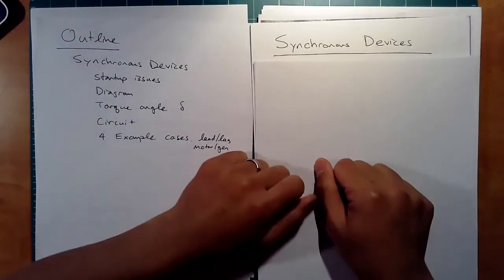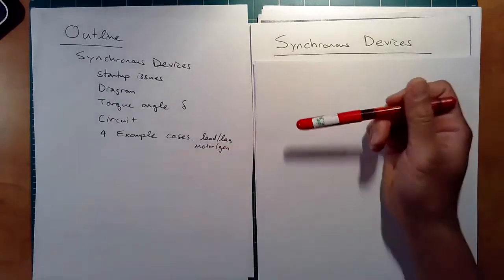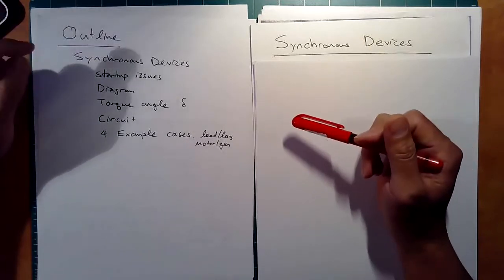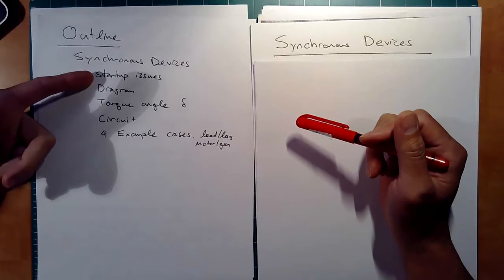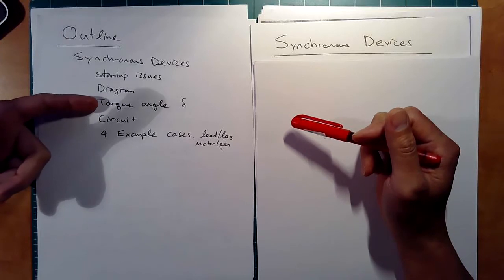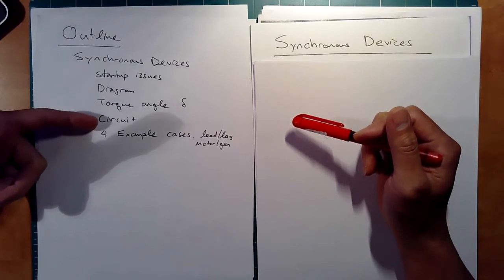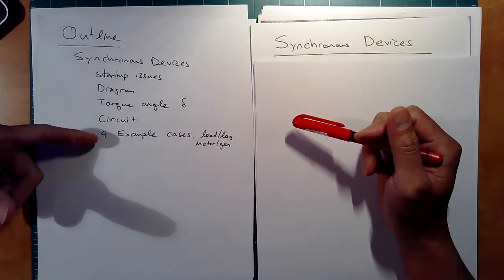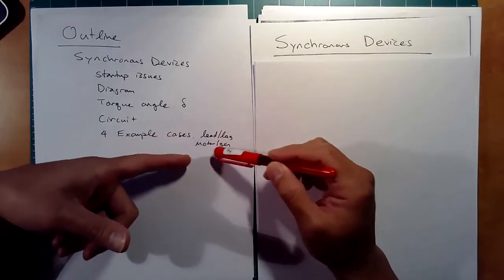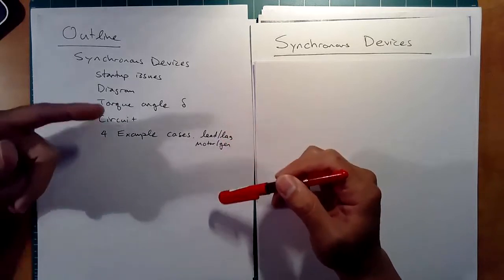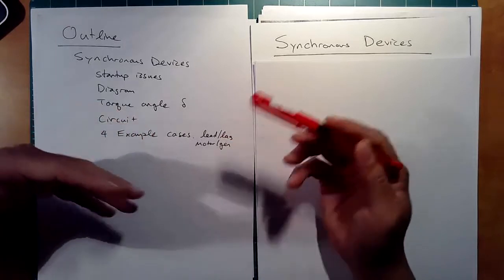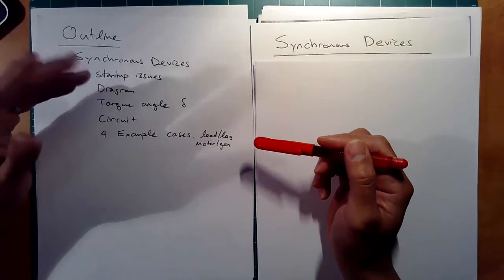Hi, this is ET350, Lecture 21, and today we're going to talk about synchronous devices. We're moving on from induction devices or asynchronous devices. We'll introduce what they are, talk about startup issues, look at a close-up diagram of what's going on inside, introduce the concept called the torque angle, and then look at the relevant circuit.